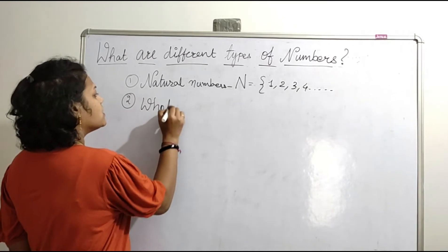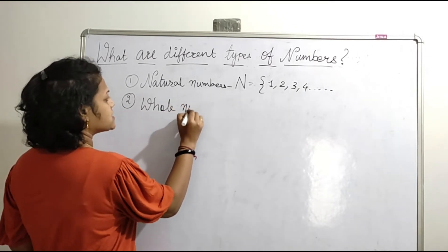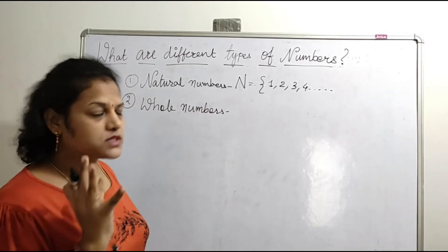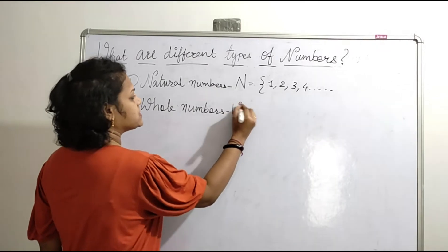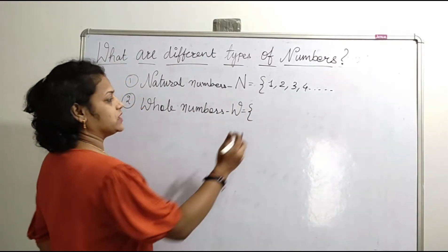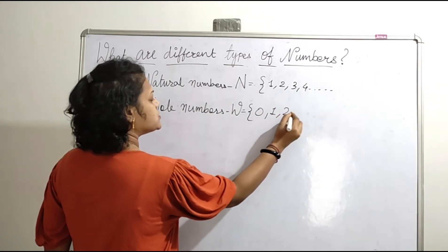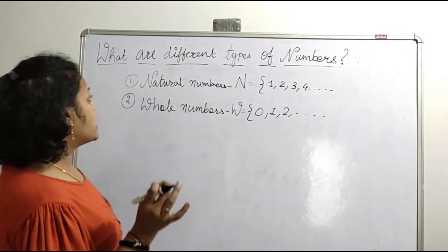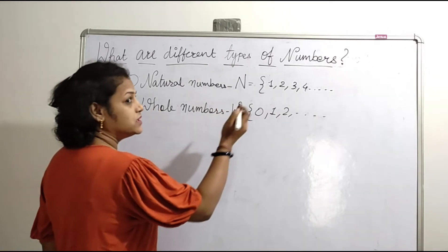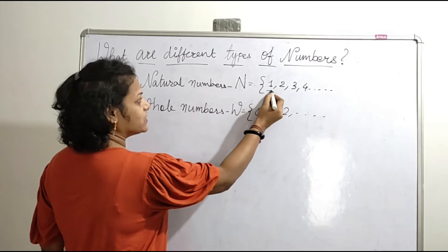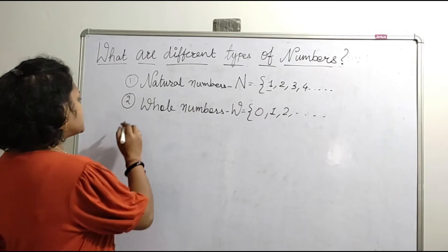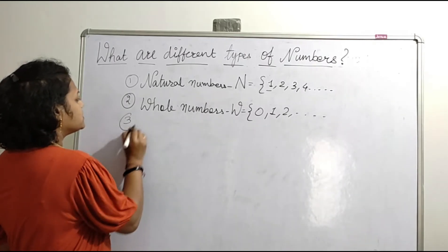Next we will see about whole numbers. Whole numbers are the non-negative numbers — they only contain positive numbers. Whole numbers are denoted by capital W and the set of whole numbers starts with 0, 1, 2, and continues to infinity. The difference between natural numbers and whole numbers is that natural numbers start with 1, while whole numbers start with 0.